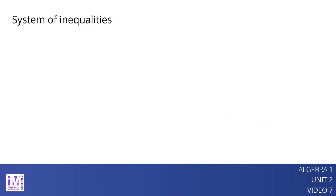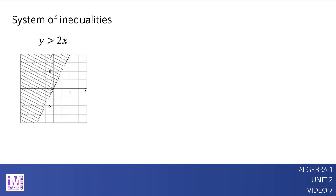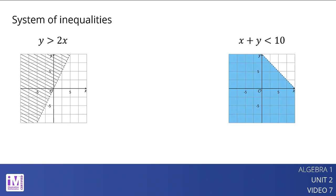Graphing is a great way to show all the possible solutions to an inequality, so let's graph the solution region for each inequality. Here is the graph of y is greater than 2x. Here is the graph of x plus y is less than 10. Because we are looking for a pair of numbers that make both inequalities true at the same time, we want to find points that are in the solution regions of both graphs. To do that, we can graph both inequalities on the same coordinate plane.